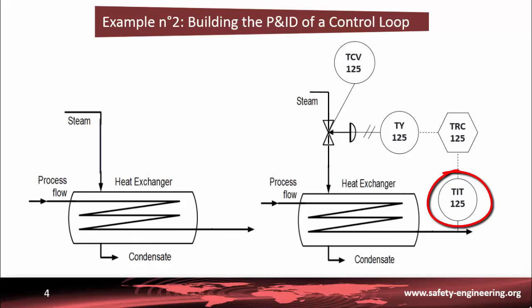First of all, we need a temperature sensor at the process flow outlet of the heat exchanger, which indicates and transmits the measured value as an electrical signal to a controller. The controller is often a recorder as well to record all the measured values. The controller then sends an electrical signal to an I/P converter indicating how much the valve should open or close. The I/P converter will then convert this signal into a pneumatic signal, which in turn gets sent to the pneumatic control valve so that it can regulate the opening.